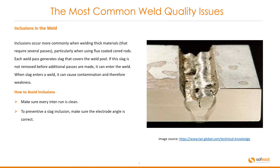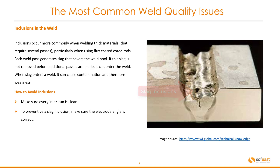Inclusions occur more commonly when welding thick materials that require several passes, particularly when using flux coated core rods. Each weld pass generates slag that covers the weld pool. If this slag is not removed before additional passes are made, it can enter the weld, causing contamination and therefore weakness. To avoid inclusions, make sure that every interrun is clean and that the electrode angle is correct to prevent slag inclusion.